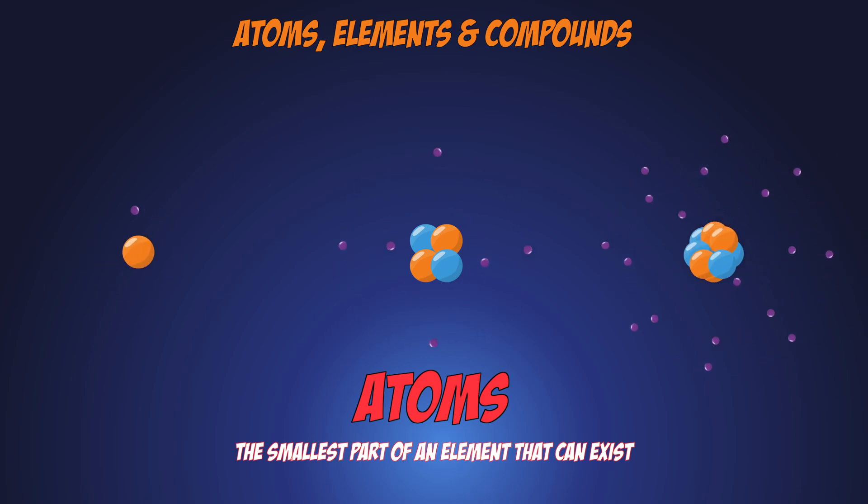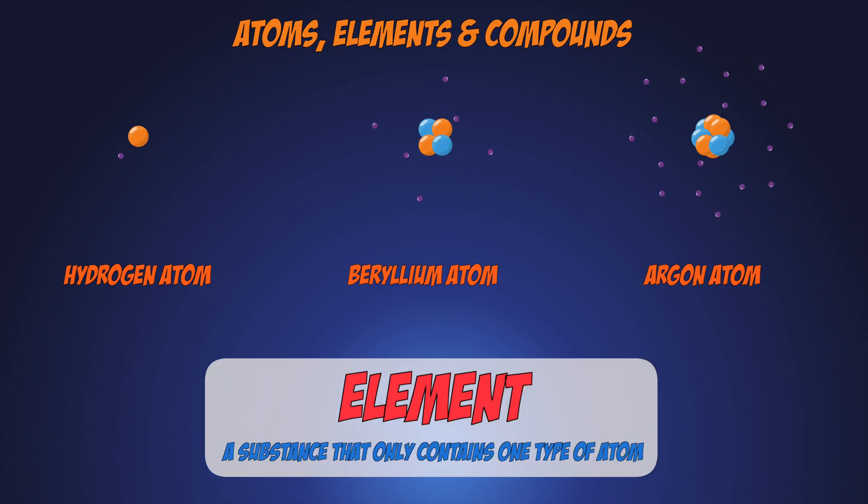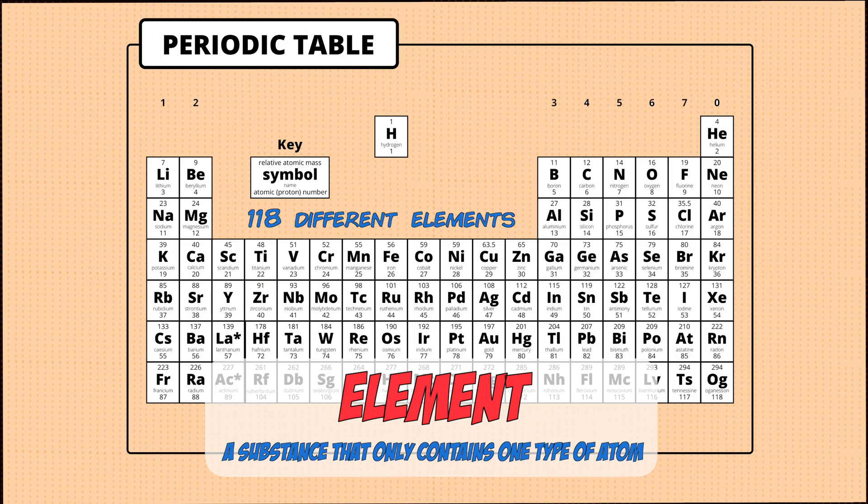You can have different types of atoms based on what elements are present in a substance. An element is defined as a substance that only contains one type of atom and every single element can be found in the periodic table. There are around 100 discovered elements and each one has a chemical symbol.